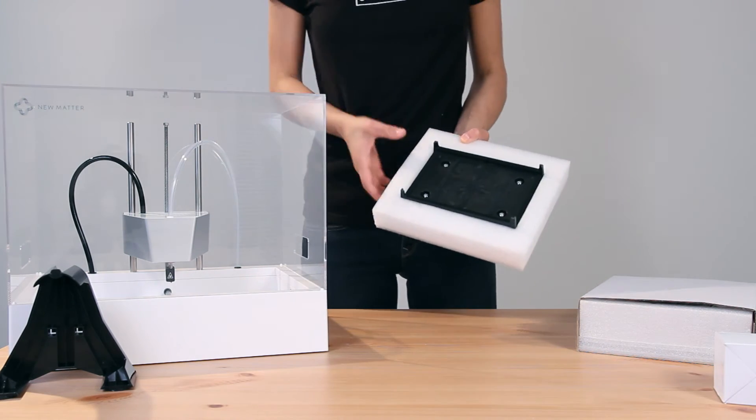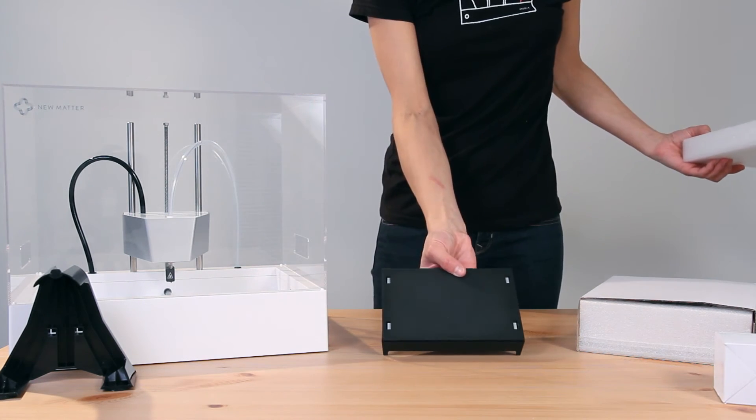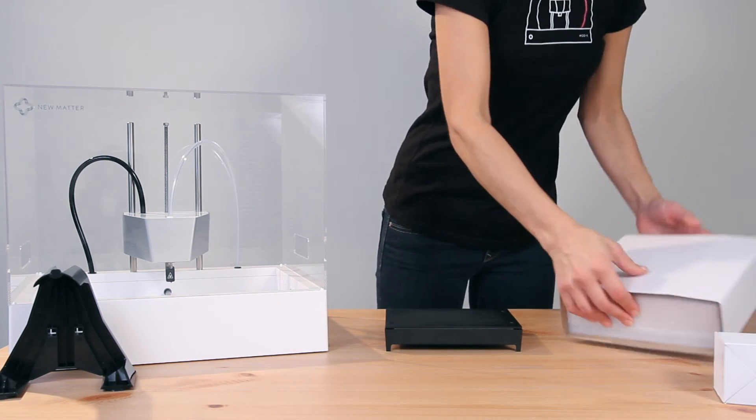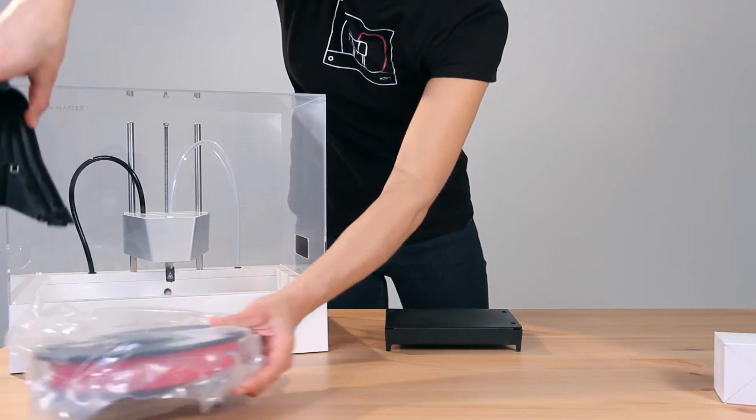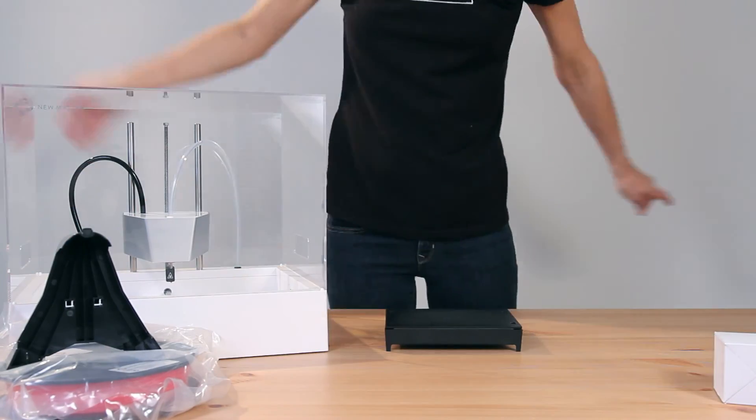Here is your build tray. It's actually made up of two parts but you'll get to know those parts individually in a later video. And last but not least, our filament. In Numatter pink, of course.